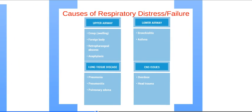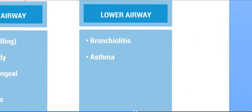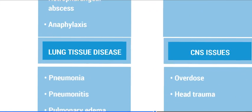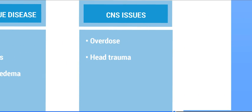Here are causes of respiratory distress. In the upper airway, distress can be caused by croup, a foreign body, retropharyngeal abscess, or anaphylaxis. In the lower airway, it is caused by bronchiolitis or asthma. Lung tissue disease is caused by pneumonia, pneumonitis, or pulmonary edema. A CNS issue is due to overdose or head trauma.